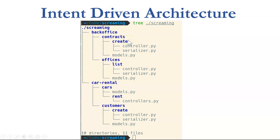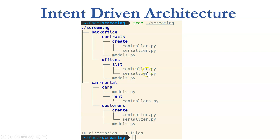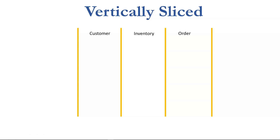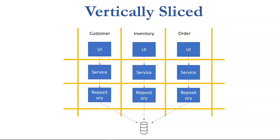Using the previous example, you'd have back office, car rental, and contact office — all vertically sliced. But if you look closely, within each slice you see controllers, serializers. So this is not purely vertically sliced; within each slice you'd still have different layers, meaning it's both vertically and horizontally sliced, resulting in a very complicated structure. The service layer would still have to reference the repository, which to me is overkill. So we need to seek a middle ground — lack of intent is a problem, but the screaming architecture appears too extreme and results in complexity again.